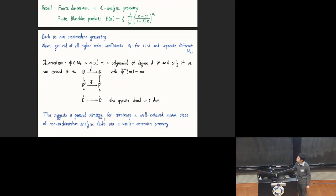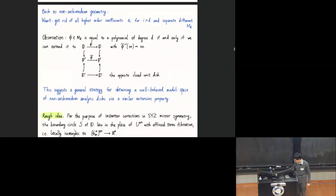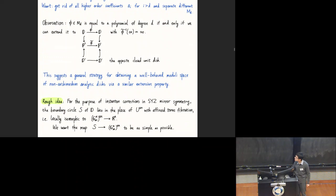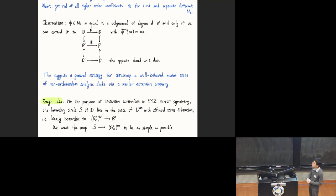Using this observation, we want to turn our non-Archimedean problem into a more tractable algebraic problem. This suggests a general strategy for obtaining a well-behaved moduli space for non-Archimedean analytic disks via a similar extension property. The rough idea is that for the purpose of instanton corrections in SYZ mirror symmetry, the boundary circle of the disk lies in places where we have nice fibrations—specifically, where we have affinoid torus fibrations.